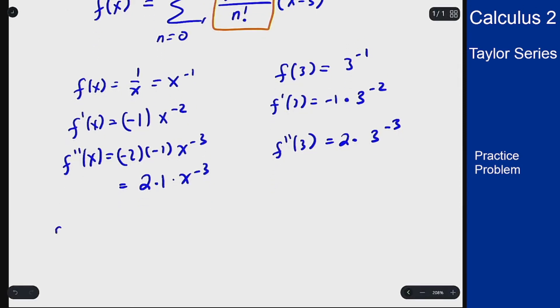Our third derivative is going to be negative 3 times that 2 times 1 times x to the minus fourth, and so when I plug in 3 here I get negative 1 times 3 times 2 times 1 times 3 to the minus fourth.